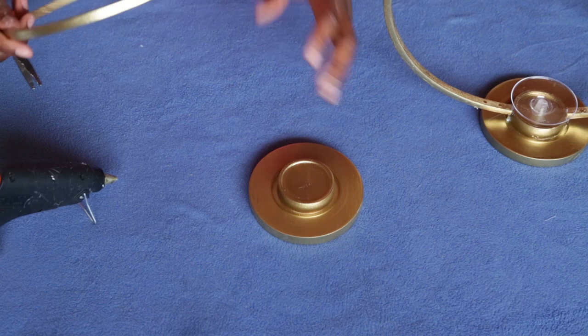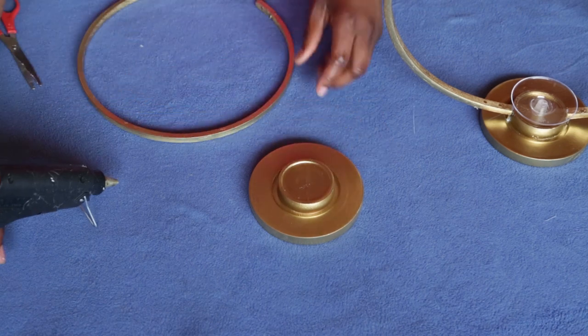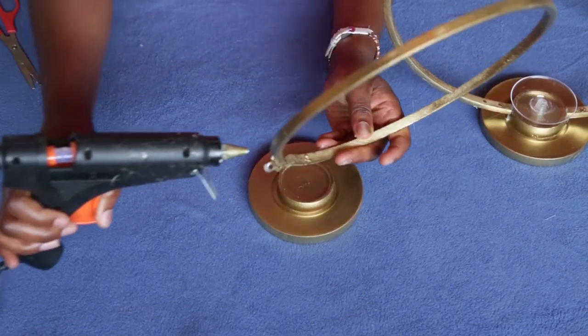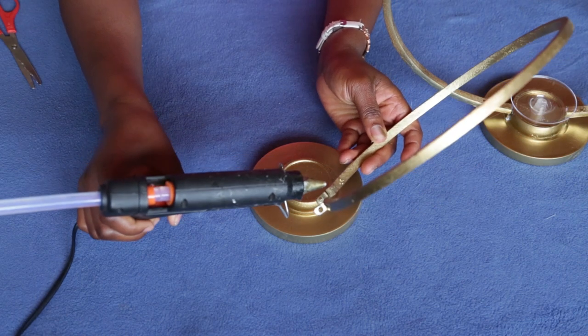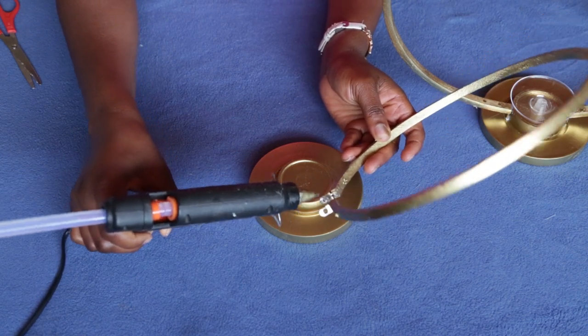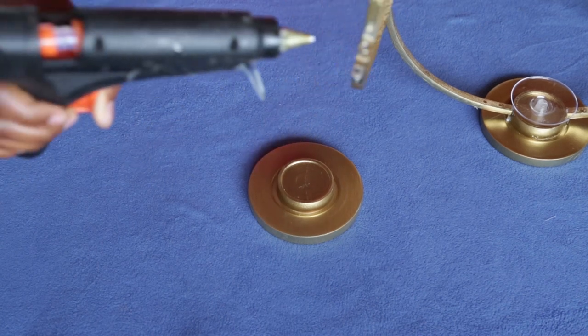So I'll do the same thing to the smaller hoop, apply glue on this side and on this other side.